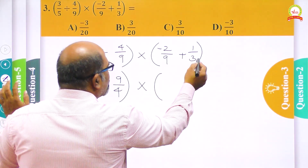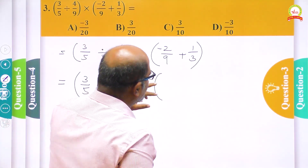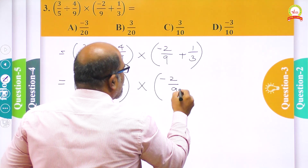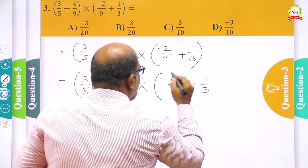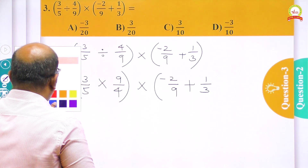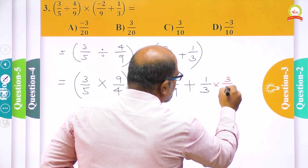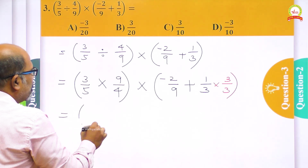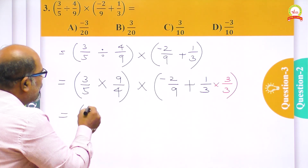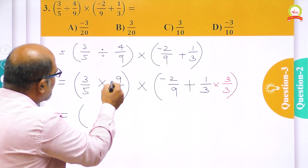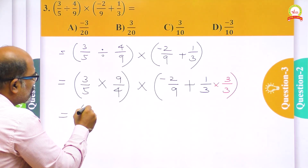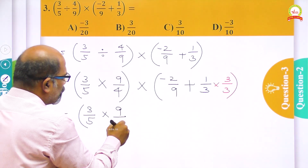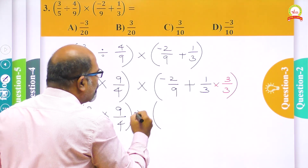First I keep 3/5. I replace the division symbol with multiplication and 4/9 becomes 9/4. For the addition inside the brackets, I want to convert to equivalent fractions. To do that I multiply 1/3 by 3 in the numerator and 3 in the denominator so that the denominator becomes 9. I keep minus 2/9 and take 1/3 multiplied by 3/3.